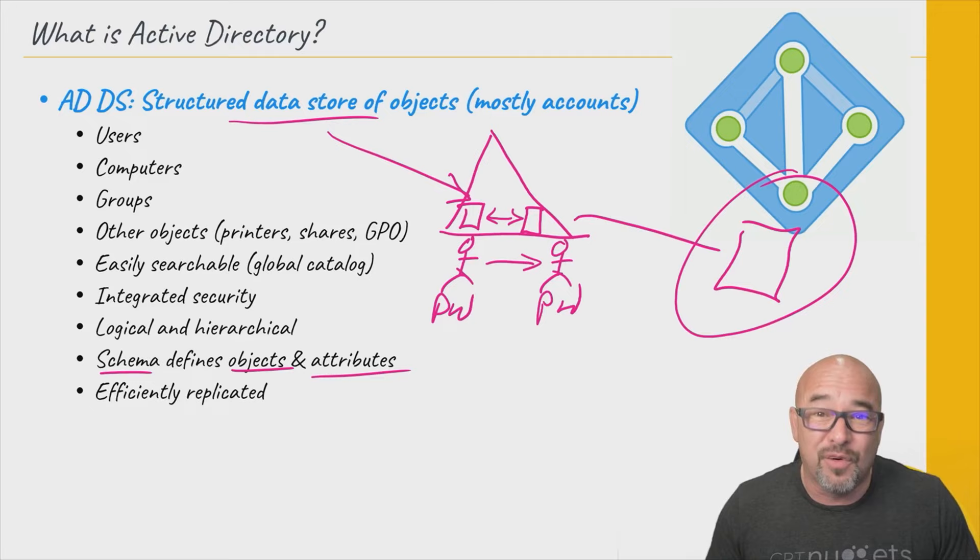That's just kind of an idea of what Active Directory Domain Services does and the kinds of things it's used for. So that's it for this nugget. In the next nugget, we'll be talking about some things that are new in Active Directory Domain Services. I hope this has been informative for you, and I'd like to thank you for viewing.